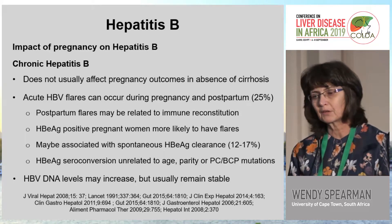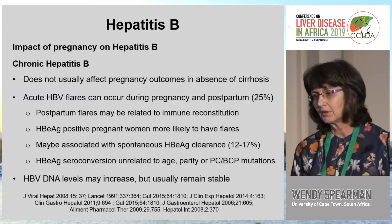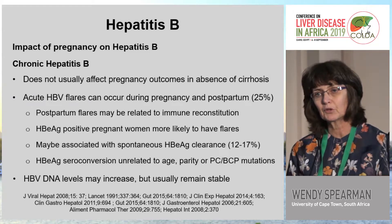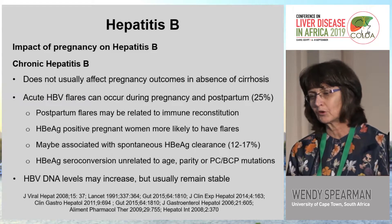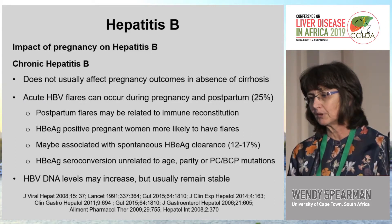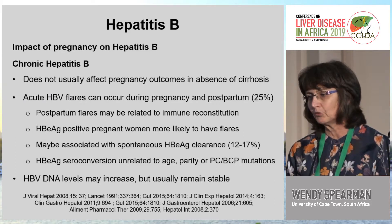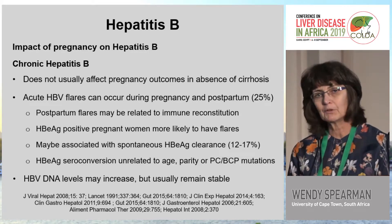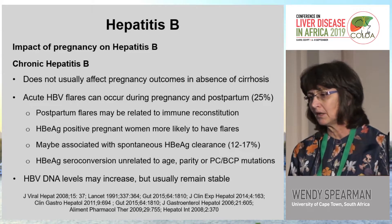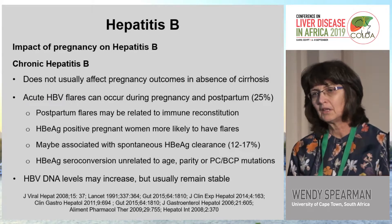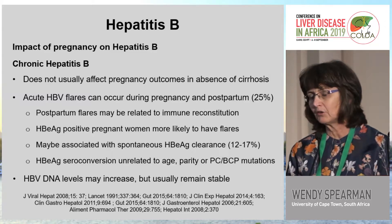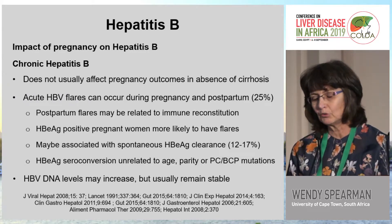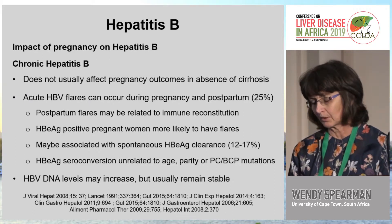Turning to the impact of chronic hepatitis B: it doesn't usually affect pregnancy outcomes in the absence of cirrhosis, but acute hepatitis B flares can occur during pregnancy in up to 20% post-delivery. These flares are thought to be related to immune reconstitution. E-antigen positive women are more likely to have flares, which may be associated with spontaneous e-antigen clearance in nearly 17%. E-antigen seroconversion is not related to age, parity, or the presence of mutations. DNA levels may increase but usually remain stable during pregnancy.